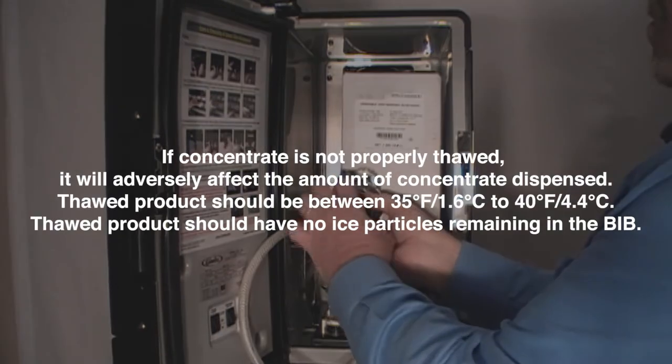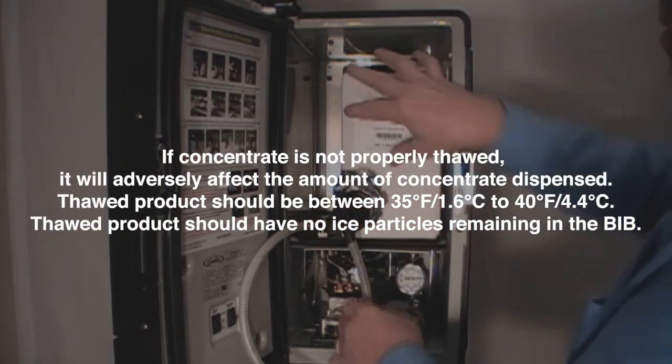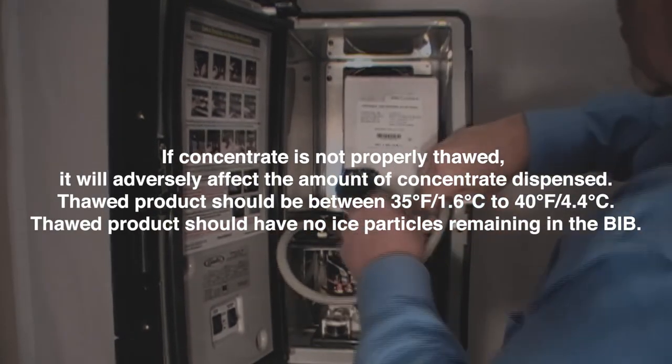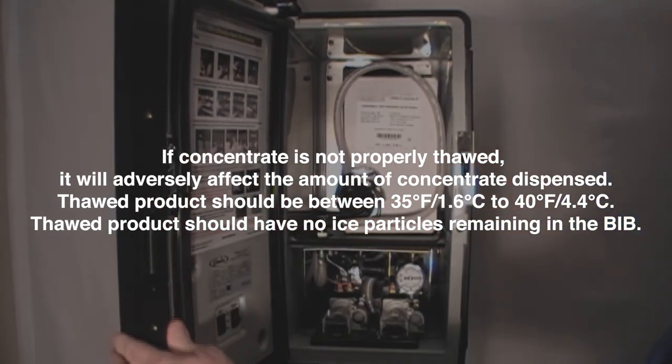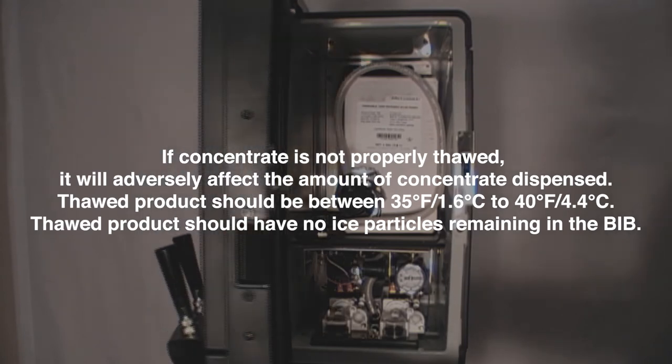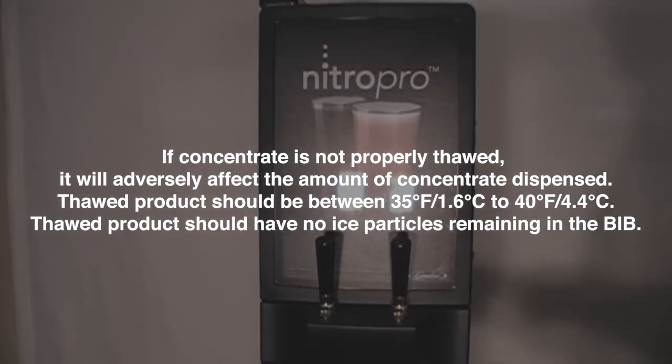If concentrate is not properly thawed, it will adversely affect the amount of concentrate dispensed. Thawed product should be between 35 degrees Fahrenheit (1.6 degrees Celsius) to 40 degrees Fahrenheit (4.4 degrees Celsius). Thawed product should have no ice particles remaining in the bib.